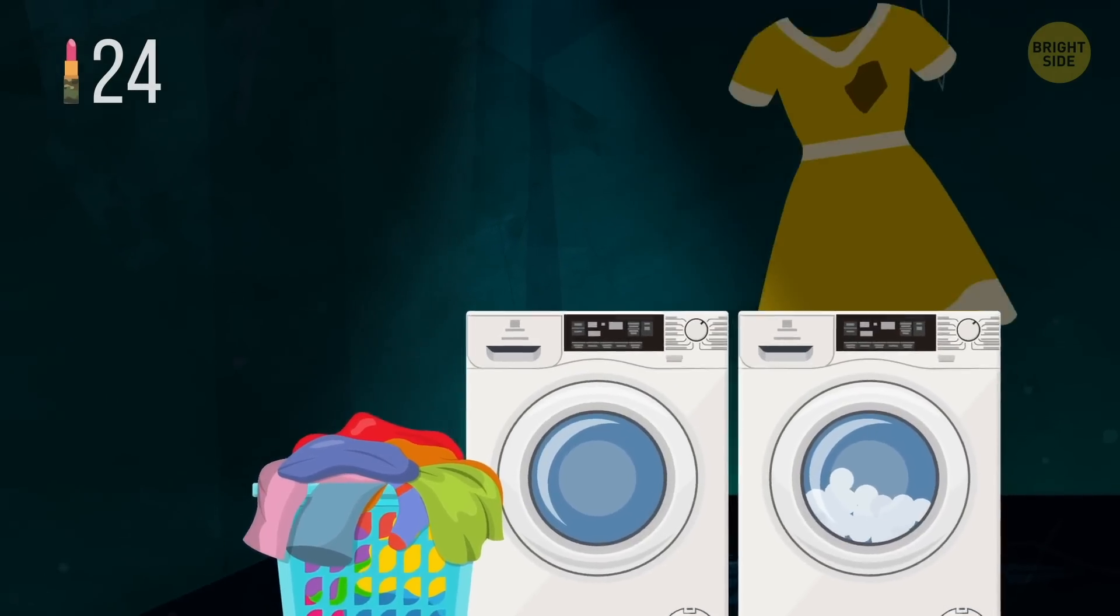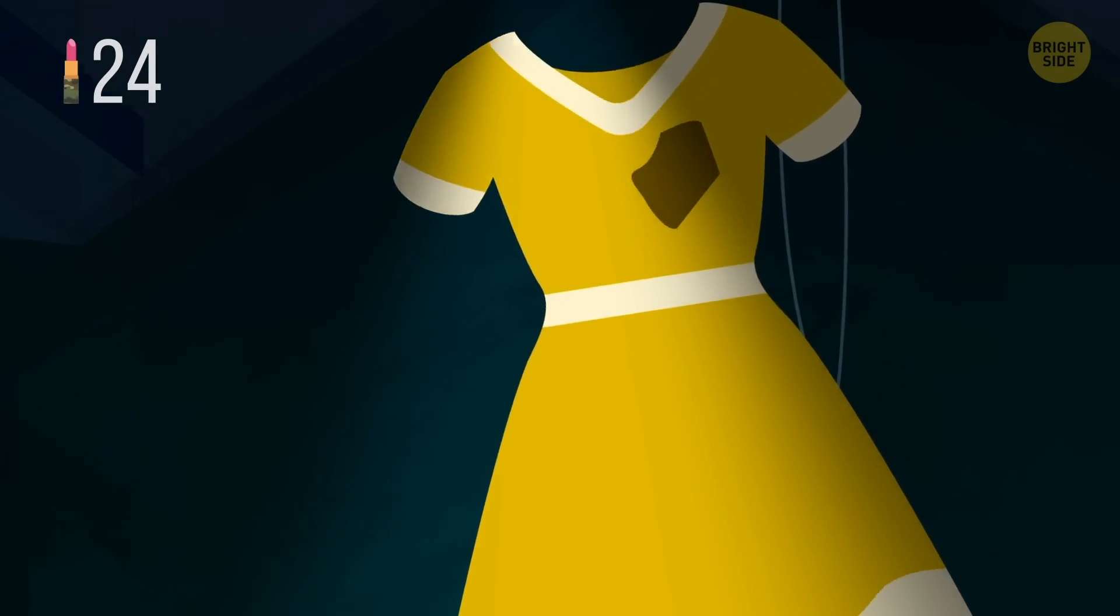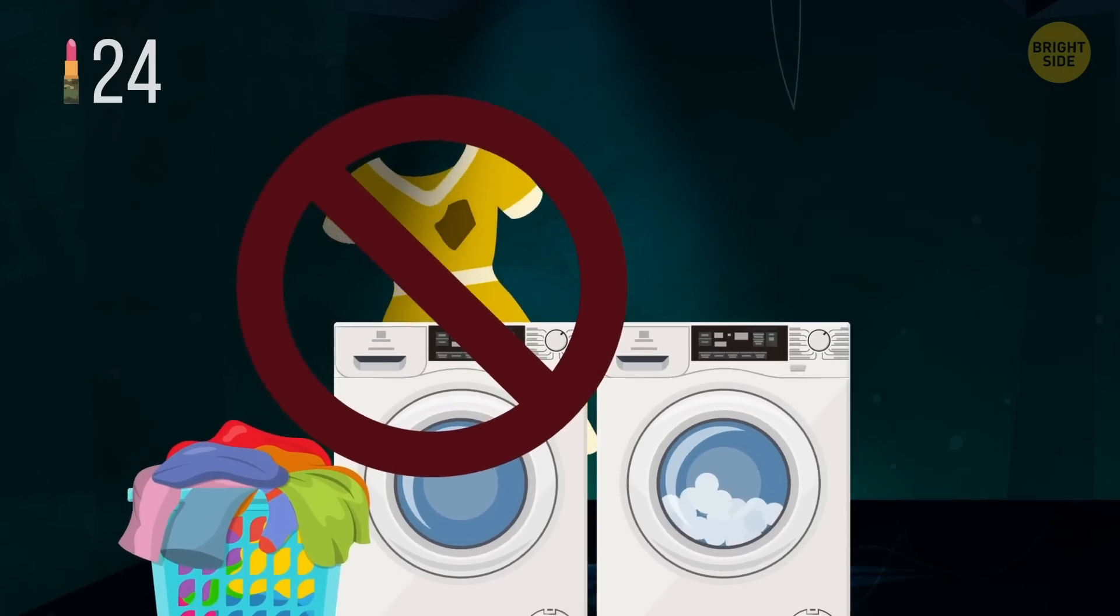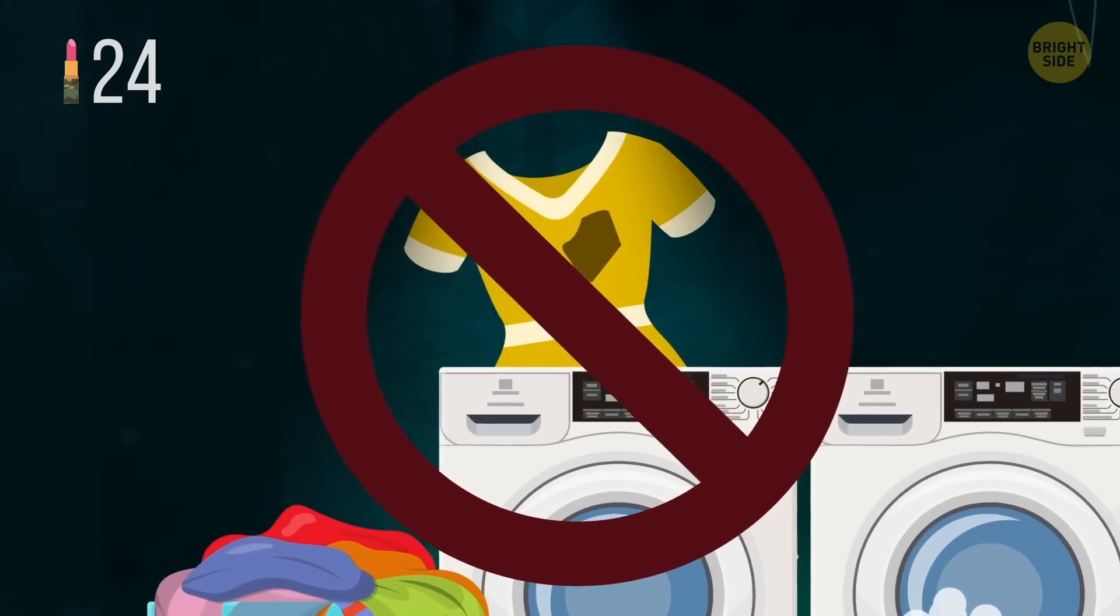If a piece of clothing comes out of the washing machine with a stain still on it, don't put it in the dryer. Otherwise, the heat will set the stain, and it'll be way harder to get rid of it.